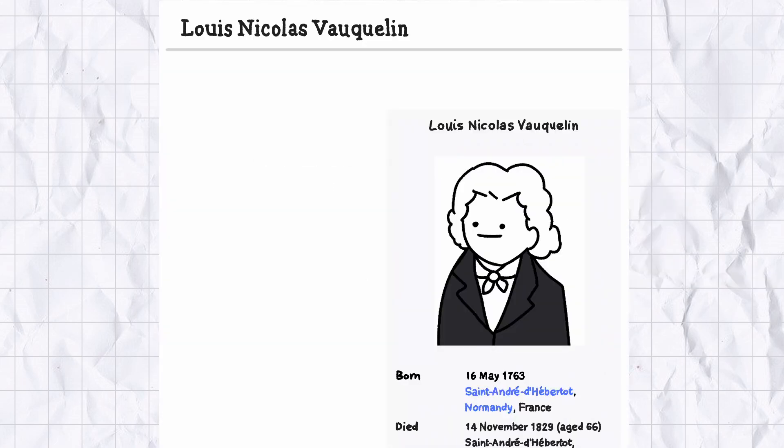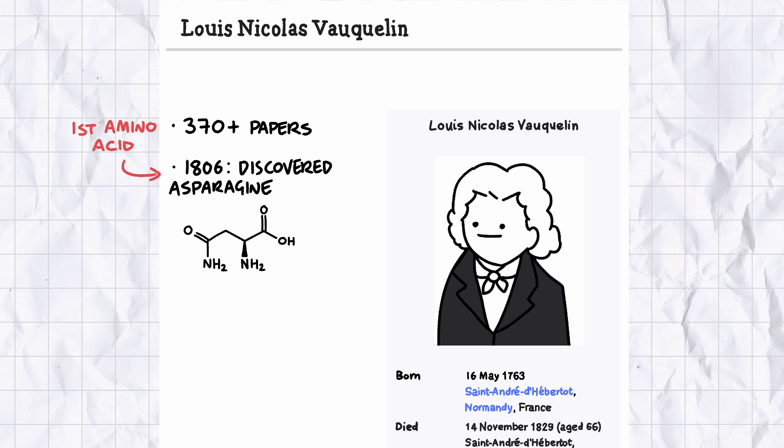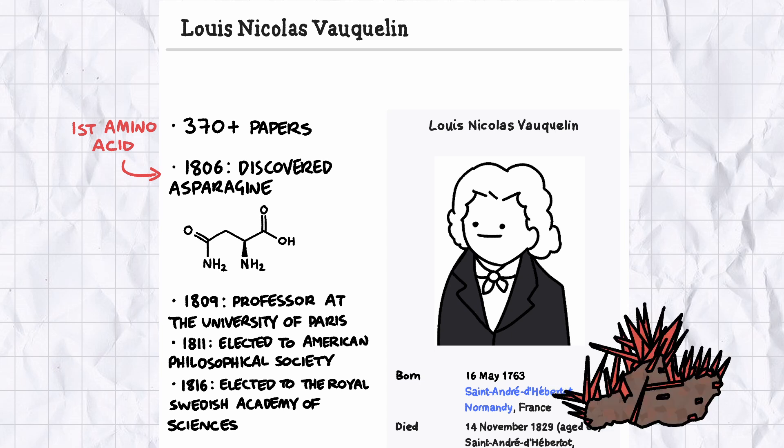By the time of his death in 1829, Vauquelin had published over 370 scientific papers, discovered a suite of compounds in organic chemistry, including the first amino acid, Asparagine, in 1806, and had been elected to some of the most prestigious scientific institutions in the Western world. Not a bad legacy for a mineral that looks like an alien hedgehog that's been mainlining Robinson's summer fruit squash.